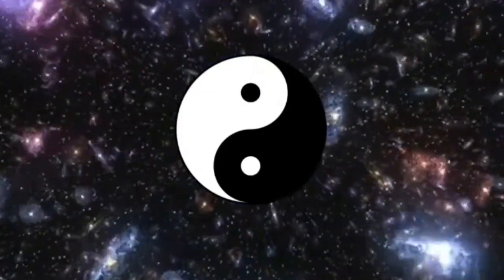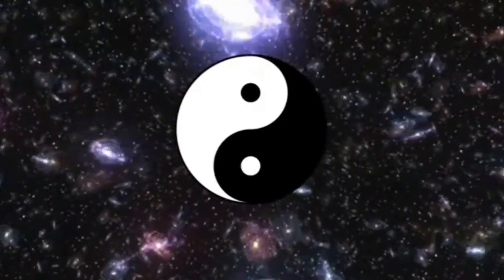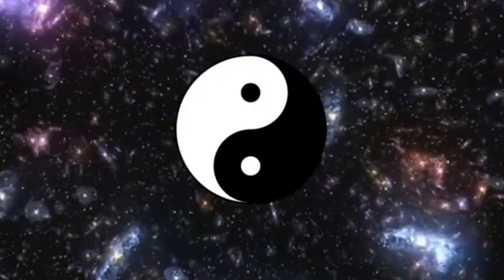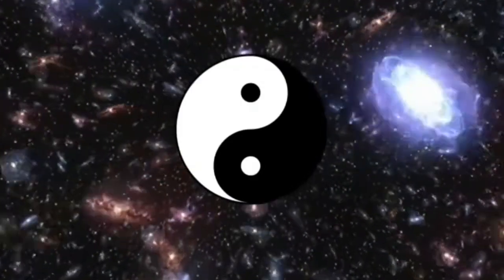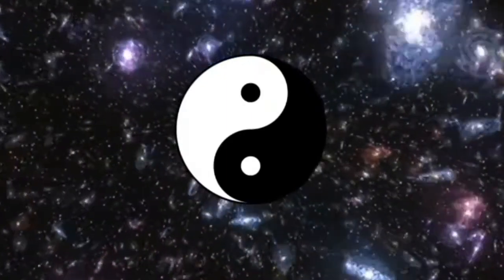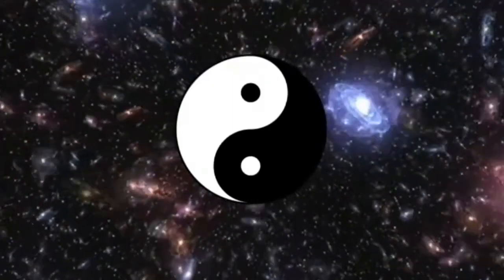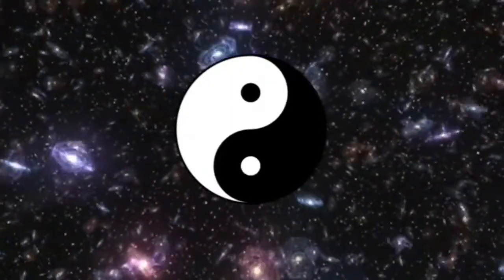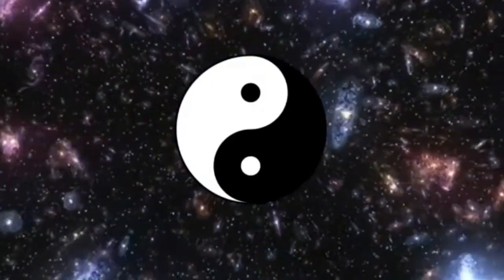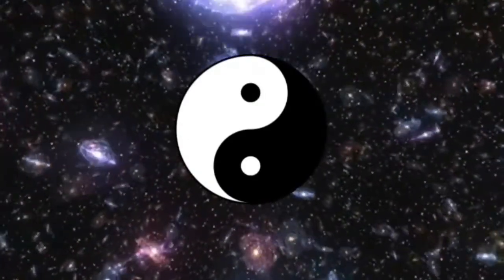Now about the points. You see that we have a black point in the white, inside the white, and a white point inside the black. Why that? What does this mean? Well, the black point inside the white represents that in everything that is more yang, you have a little amount of yin. We don't have in the universe, in the manifestation of the universe, extremes.